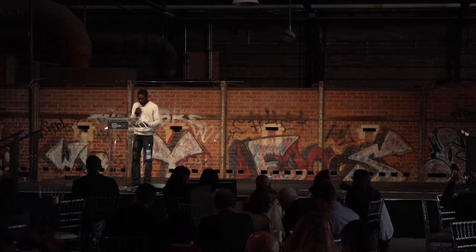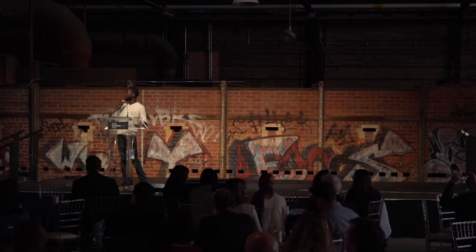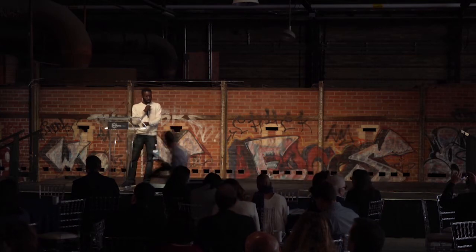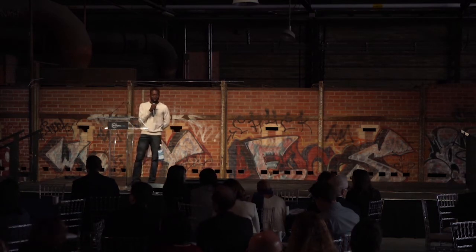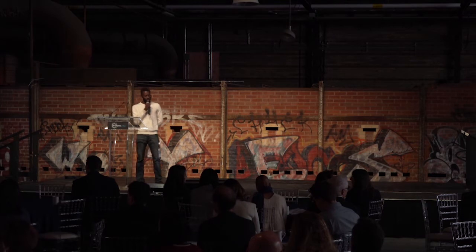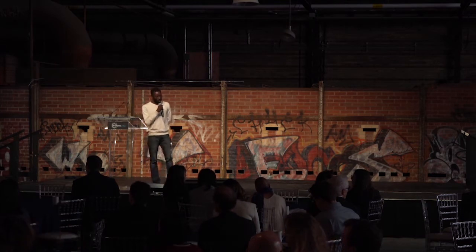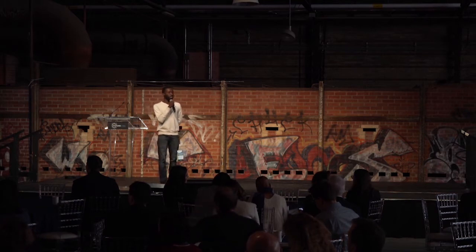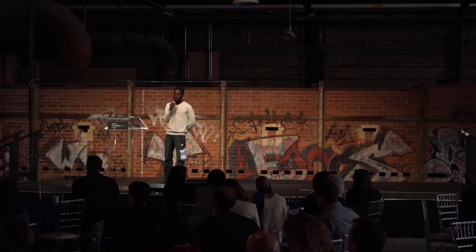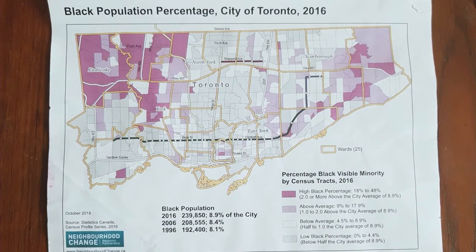I only have one slide that I want to keep up for the duration of this presentation. This is a map of the city of Toronto. Specifically, you can see at the top it says 'Black Population Percentage, City of Toronto, 2016.' This is from David Hulchanski at the University of Toronto, as part of some recent census data that he and his team at U of T have been using to talk about inequality and discrimination in the city of Toronto.